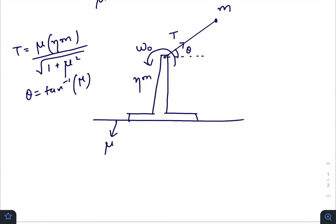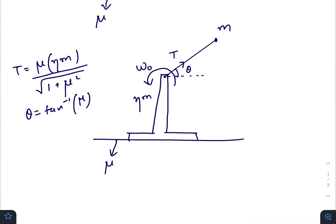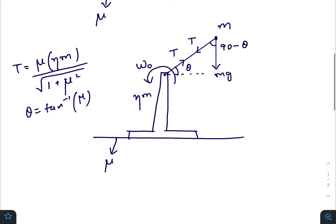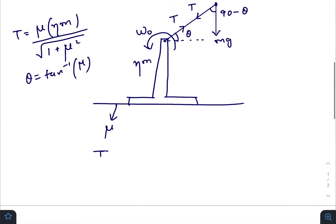At this instant, this mass is performing circular motion considering this point as the center. Force due to gravity is mg. For this mass, the net force towards the center is T + mg·cos(90° - θ) = mω²r, so T + mg·sin(θ) = mω²r.